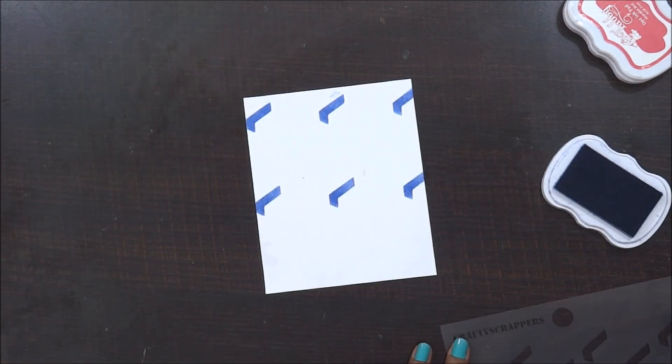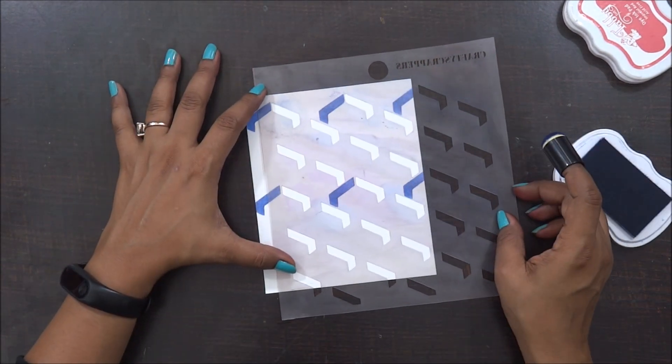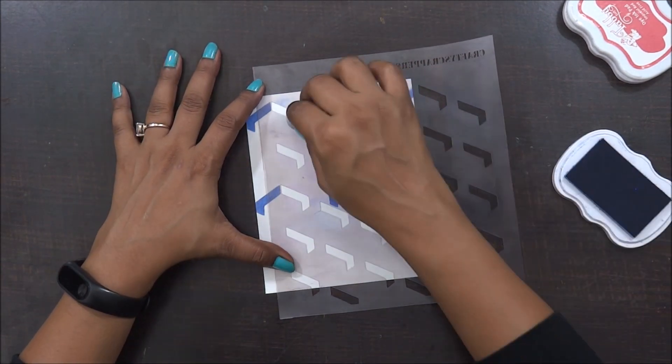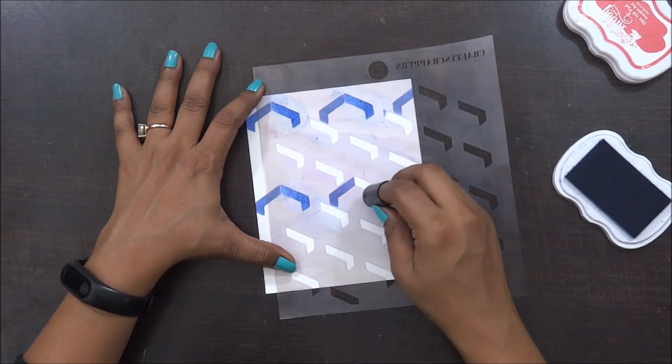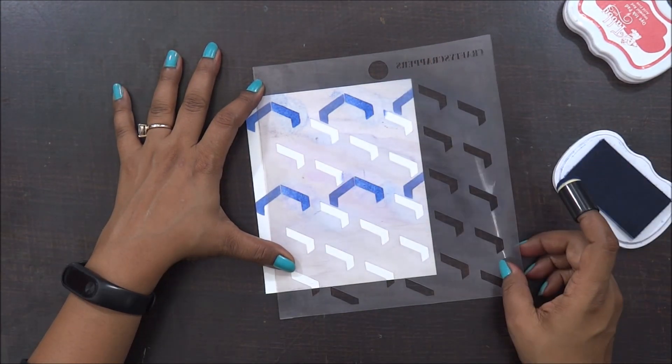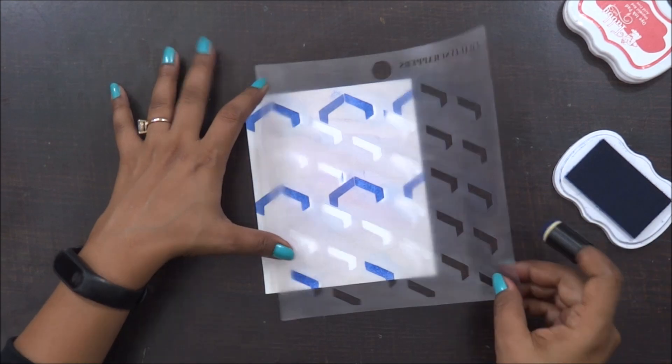You need to be a little particular to do this stamping. This is a little confusing but once you start doing it, it's really fun. Here I am just aligning my stencil again and I am going to create a cute little box kind of pattern.